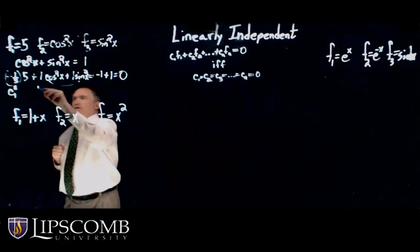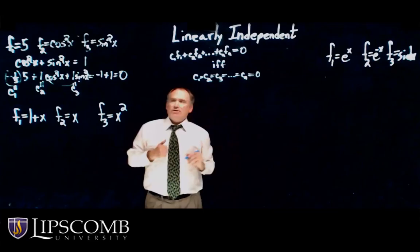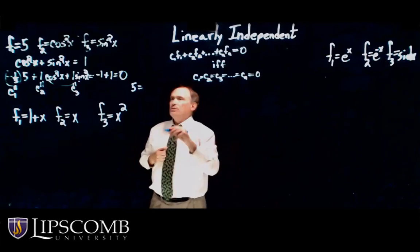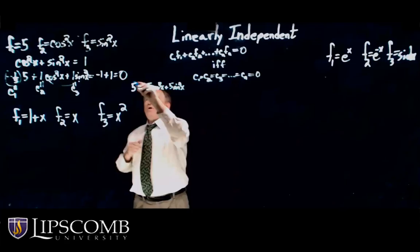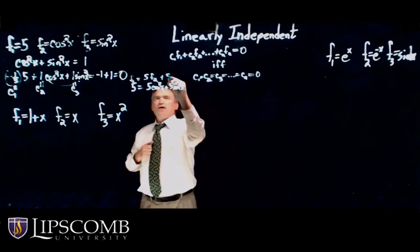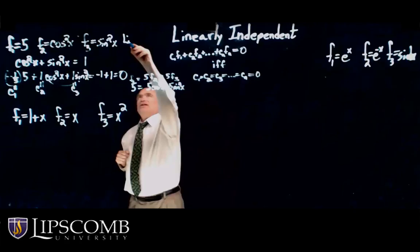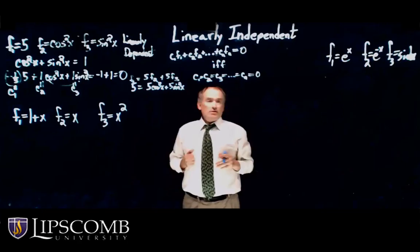So in this case, c1 equals minus 1 fifth, c2 equals 1, c3 equals 1. So I can write one of these as a linear combination of the others. Let me show you. 5 equals 5 times cosine squared x plus 5 times sine squared x. So f1 equals 5 times f2 plus 5 times f3. So you see, f1 is a linear combination of the other two. So this set is linearly dependent.